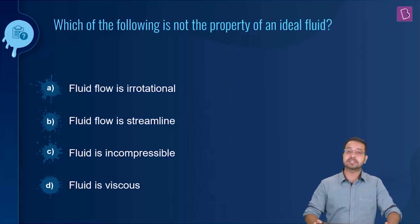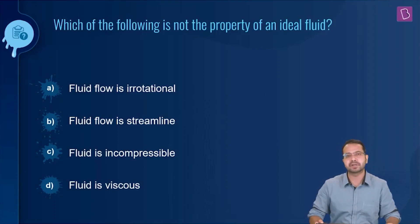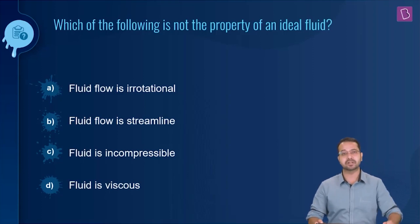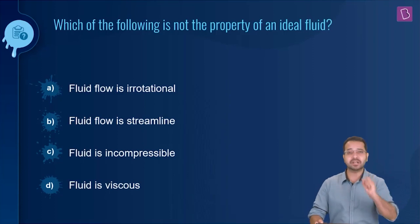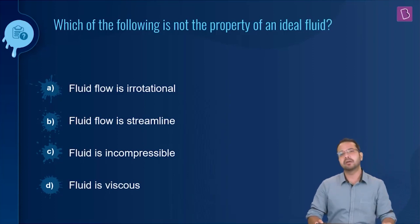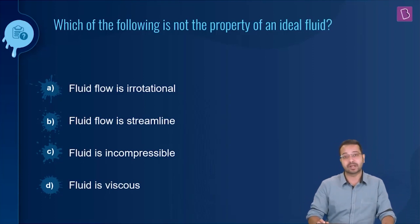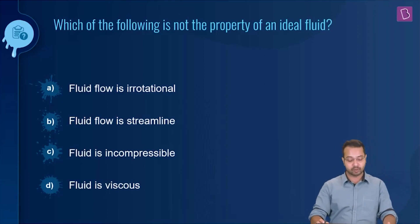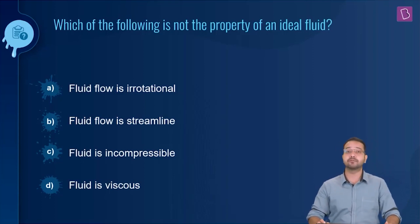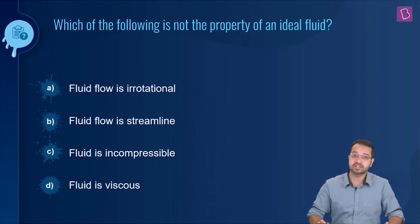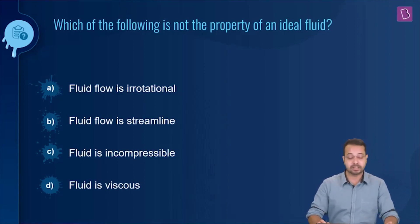Fluid flow is streamlined. Streamline means that the velocity at a particular point is constant both in magnitude and direction, so any particle reaching a particular point will have the same velocity both in magnitude and direction. That is also considered when we talk about an ideal fluid. Fluid is incompressible — we assume that the density of fluid does not change.